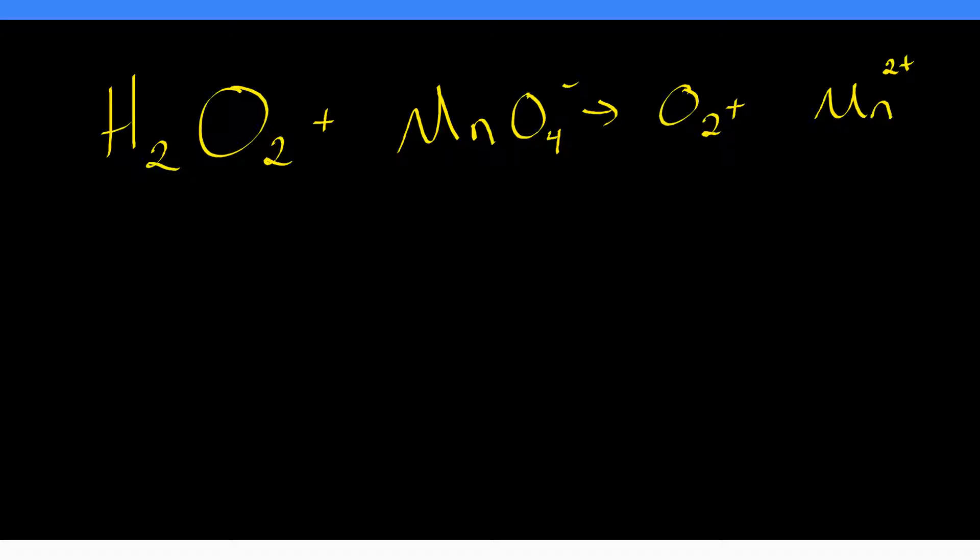Here is our unbalanced reaction. The first thing you'll notice is that it's unbalanceable by normal means — that's intentional. This is a different class of reaction and you have to treat it a different way. The first thing we have to do is identify the oxidation numbers of everything involved. Working from left to right: hydrogen is plus one, and oxygen — be careful, this is a peroxide — so the oxidation number on oxygen is minus one. So plus one and minus one.